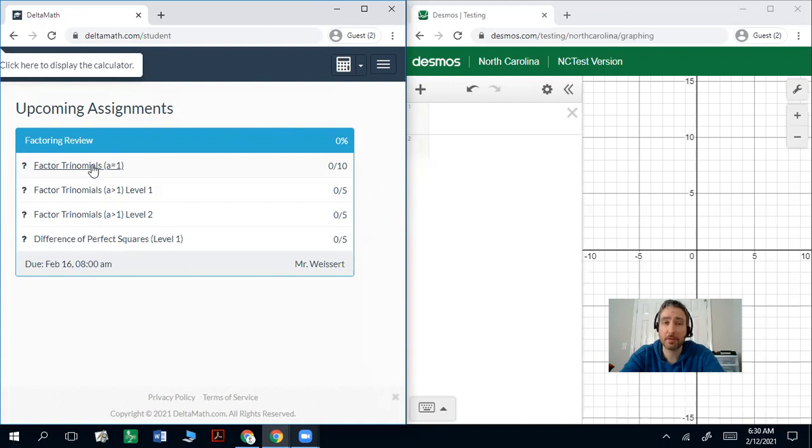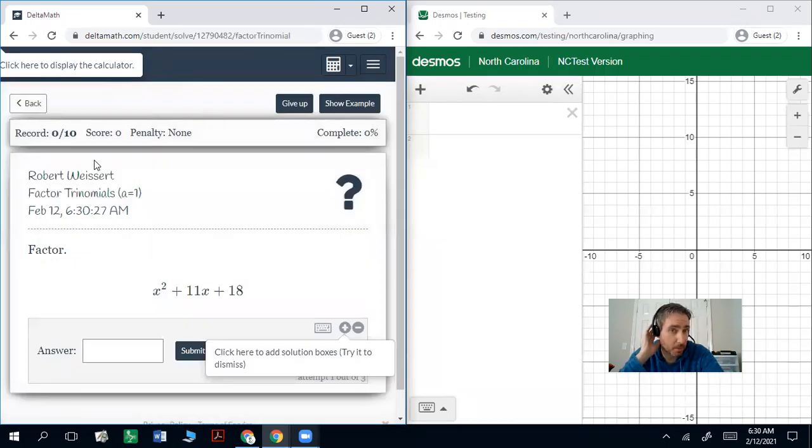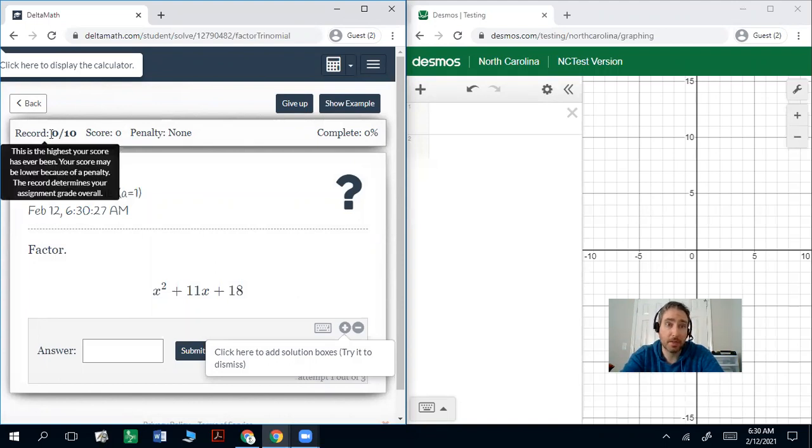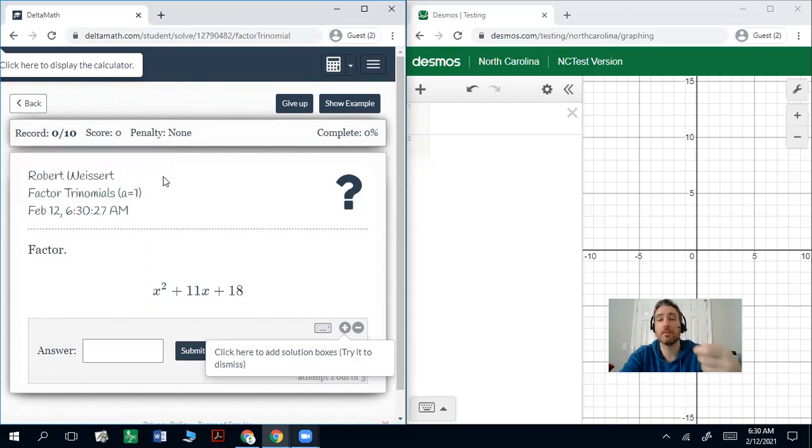So we'll start with factoring trinomials. A equals 1. Now on each skill it'll tell you how many you need to have, so you need to have 10 of these correct to be able to get full credit for it. I don't take any points off for getting it wrong and I usually give you a few chances on each problem, but if you use up all your chances it'll just throw a new problem at you which you can try again.